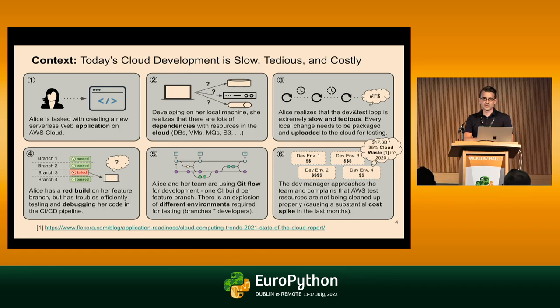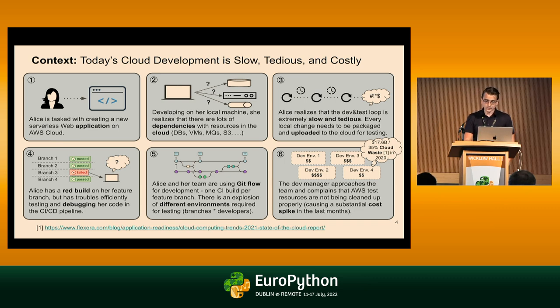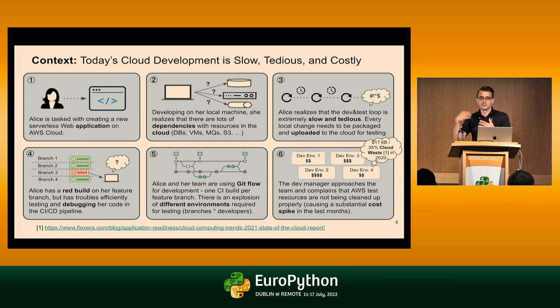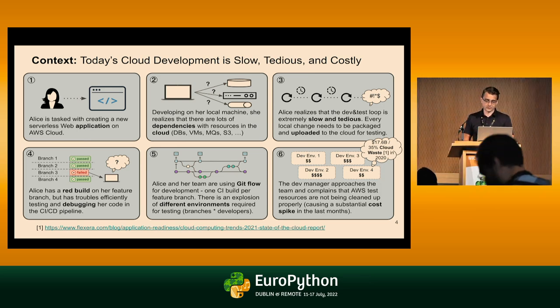Just a quick intro and background. The context of where we're operating — maybe just a quick show of hands: who of you are actively involved in cloud development, say with AWS? Okay, so that's the majority, about 75% of the audience. What we're seeing a lot is that the cloud is great — it's very scalable, very performant — but sometimes the dev loop can be quite slow and tedious. You need to deploy changes to the cloud, wait for the result, see if it fails or runs, and then do another deployment.